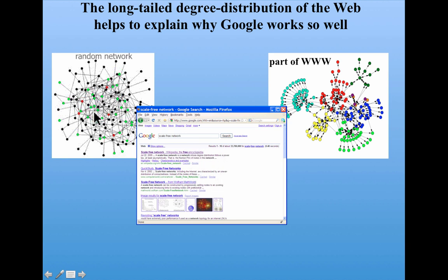Whereas if the web was a random network then all of the web pages would have about the same number of links, the average of the bell curve. And Google would have no way to discriminate among them to decide how to rank the answers.